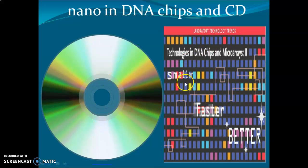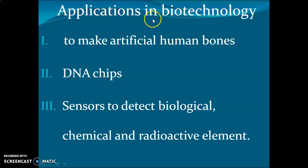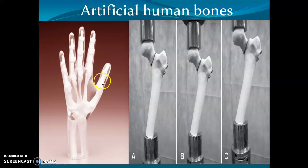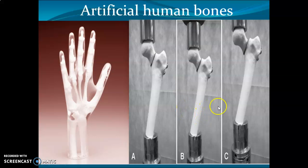In biotechnology, one of the broadest applications is to make artificial human bones, DNA chips, sensors for data biology, and detection of chemical and radioactive elements. This shows a bone made using nanotechnology — an artificial bone fabricated with nanomaterials.